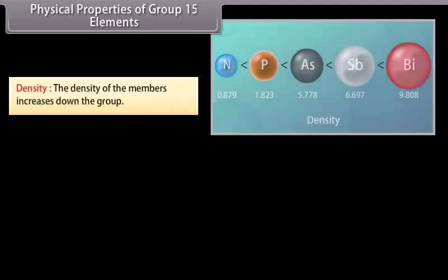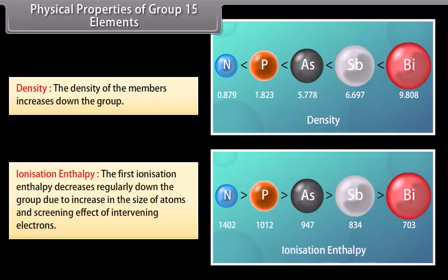Density increases down the group. The first ionization enthalpy decreases regularly down the group due to increase in the size of atoms and the screening effect of intervening electrons.